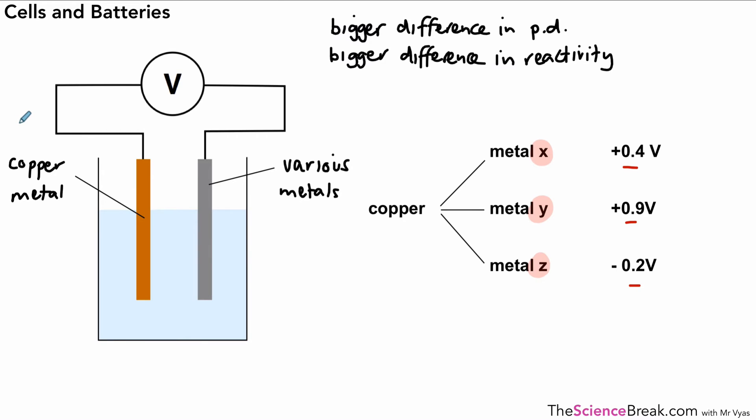So you can start making deductions based on that information. If we look at the most reactive metal, it's going to be the one with the biggest potential difference of +0.9 volts. Then we have +0.4, then we're going to have copper, and then we're going to have metal Z because that has a negative potential difference. So copper is more reactive than metal Z. Metal X is more reactive than the copper, and metal Y is the most reactive. So we can put them in order: Y, X, copper, and Z.